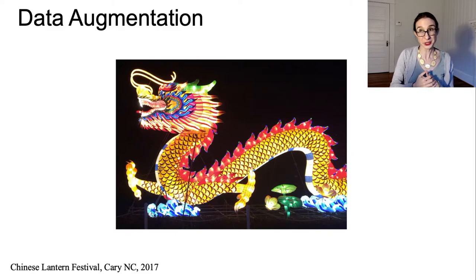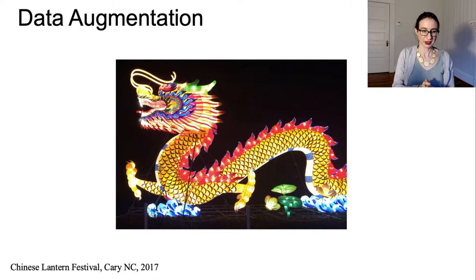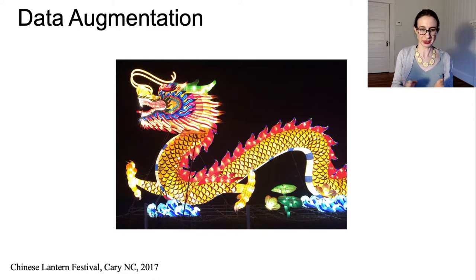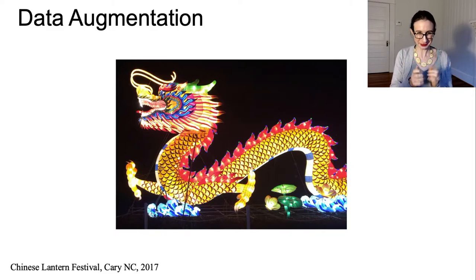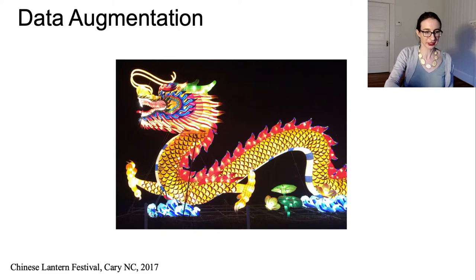There are at least two ways to build invariances into a neural network. The first is to tell the neural network what you want it to be invariant to by constraining it. However, it is not easy to put constraints into a neural network — they're really not amenable to that. So plan number two is to change the data, incorporating invariances directly into the data set and hoping that the neural network will learn the invariance.